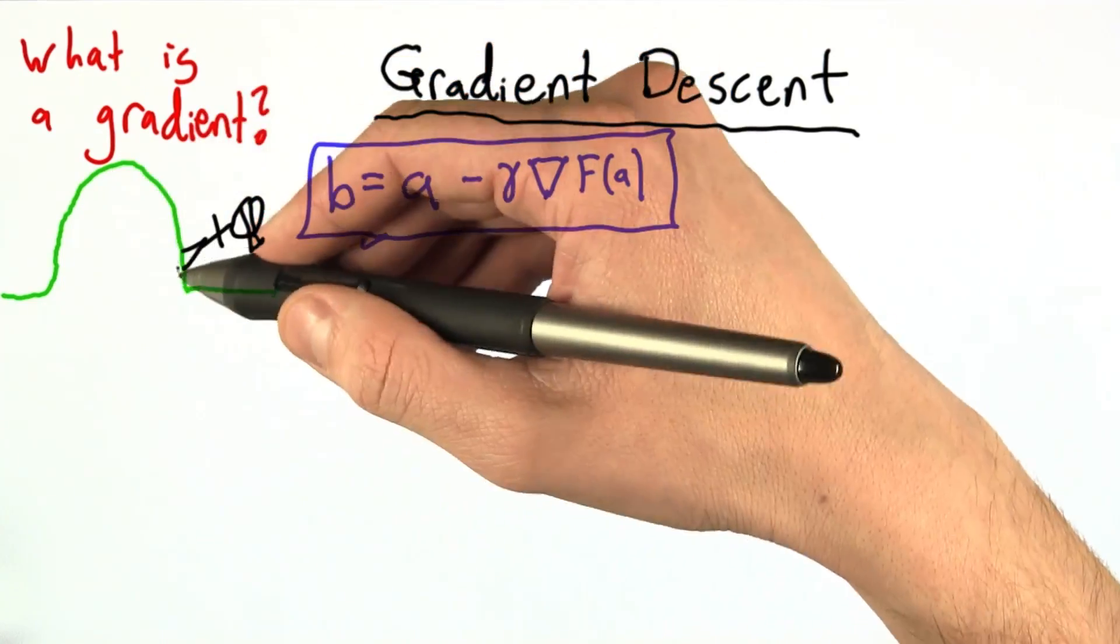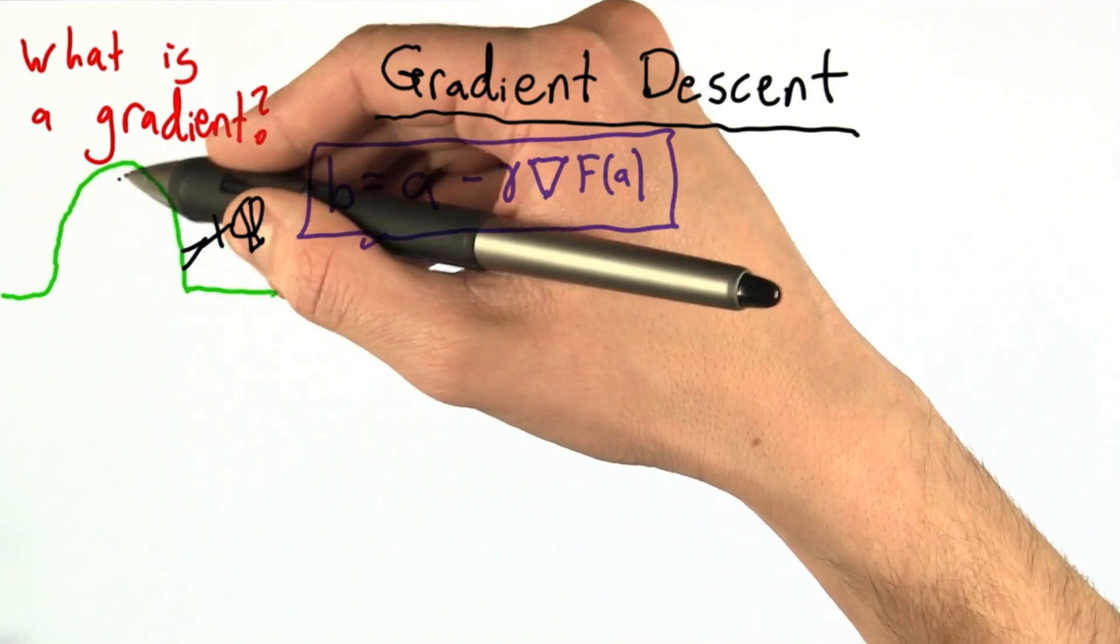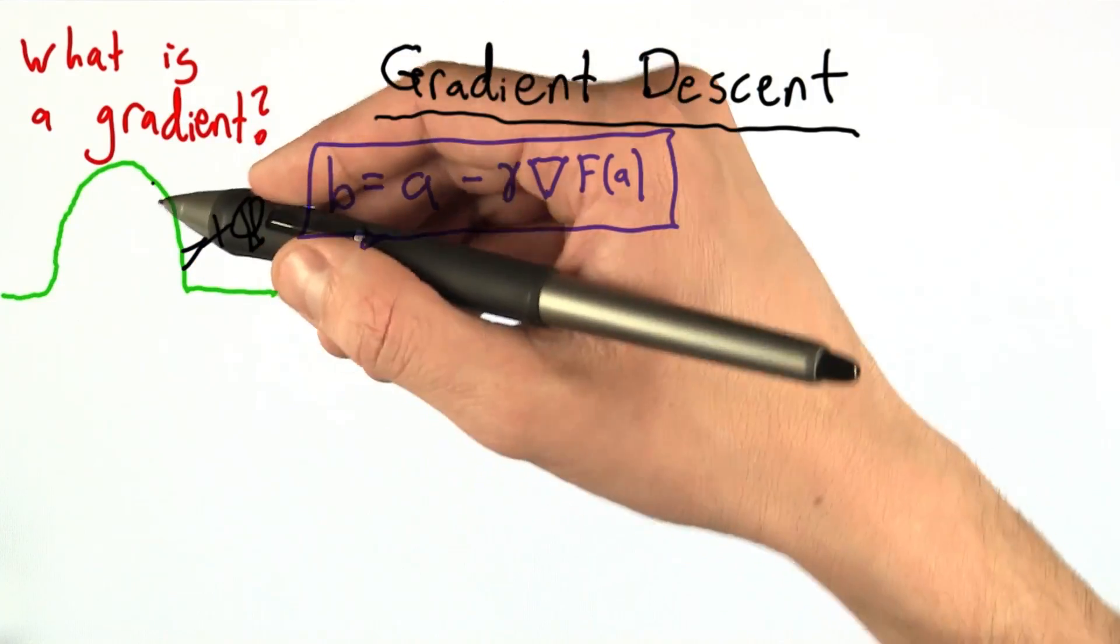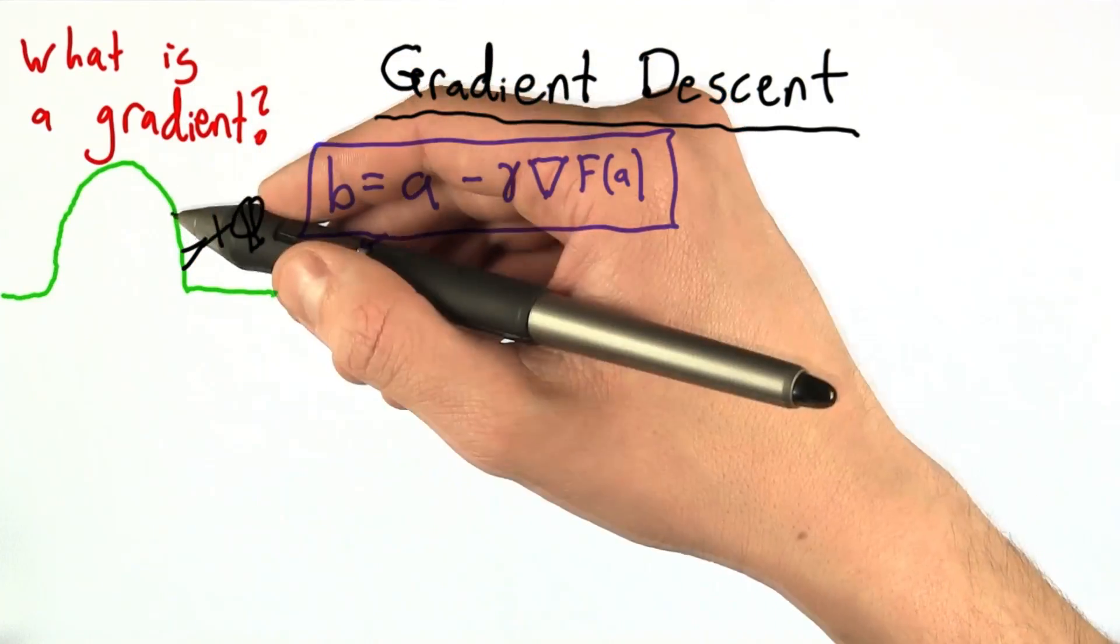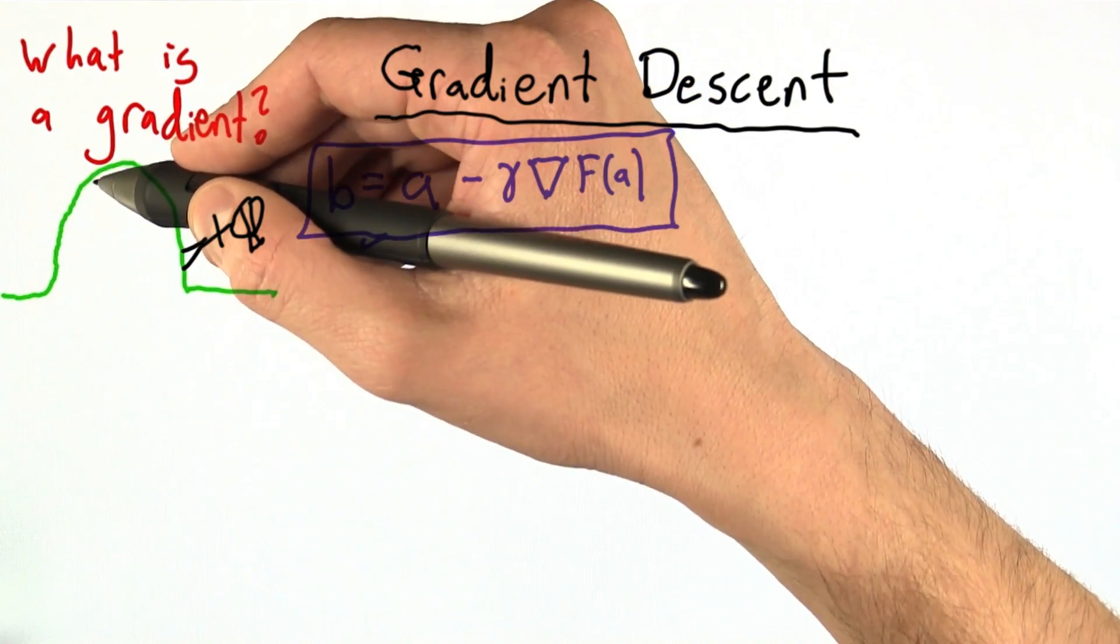As long as the hill is steep, he knows he can afford to take a really big step, because he's still not really close to the top. As the hill smooths out and becomes more level, he's going to want to take smaller and smaller steps, because he's going to be afraid of overshooting the top and winding up on the other side of the hill.